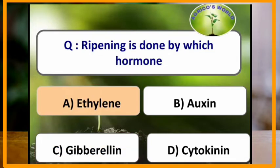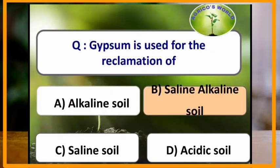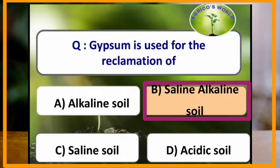Ripening is done by which hormone? Ripening is done by ethylene hormone. Gypsum is used for the reclamation of saline alkali soils.